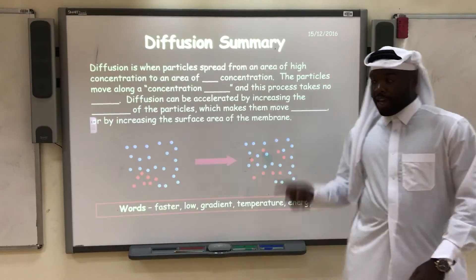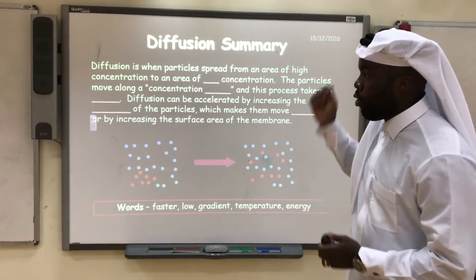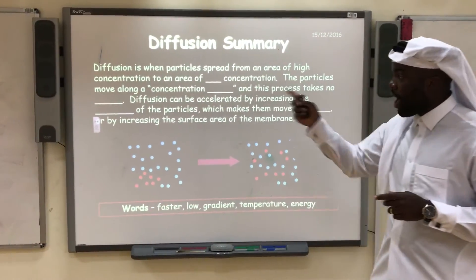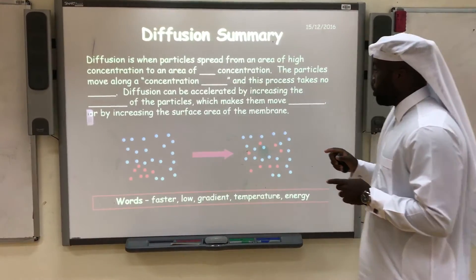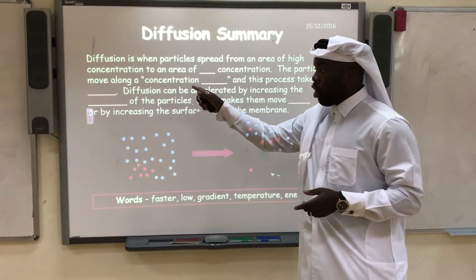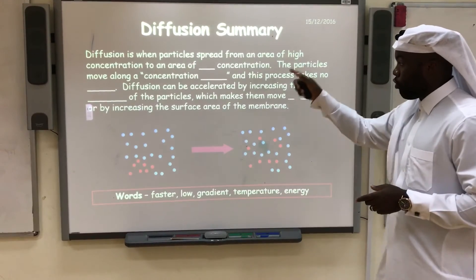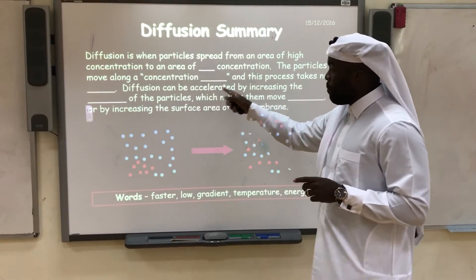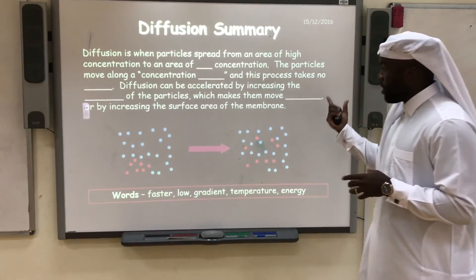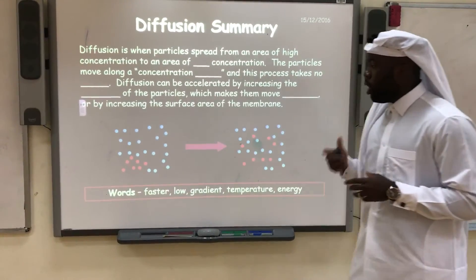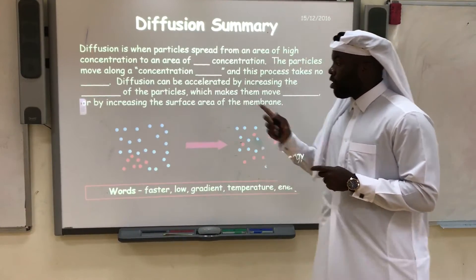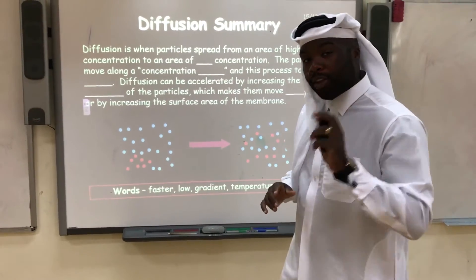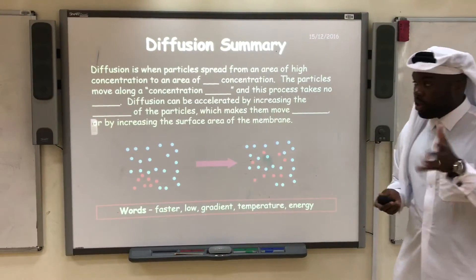Hopefully you've paused the video. Let's go through this and see if you've got these right. Diffusion is when particles spread from an area of high concentration to an area of low concentration. The particles move along a concentration gradient, and this process takes no energy. Diffusion can be accelerated by increasing the temperature of the particles, which makes them move faster, or by increasing the surface area of the membrane. That's a brief recap back to year 10, when you studied B2 diffusion.